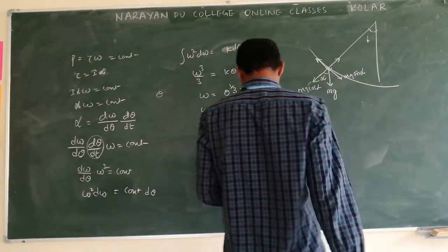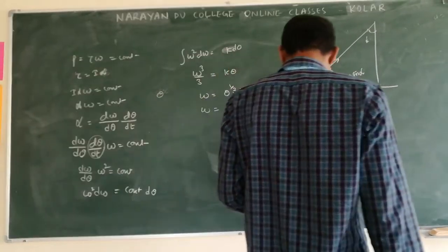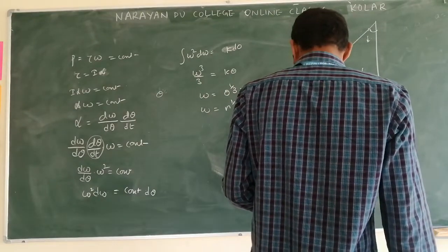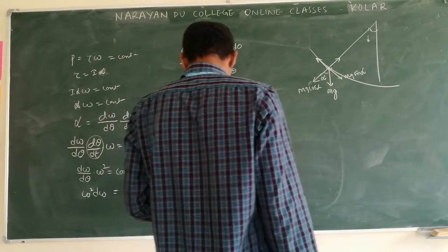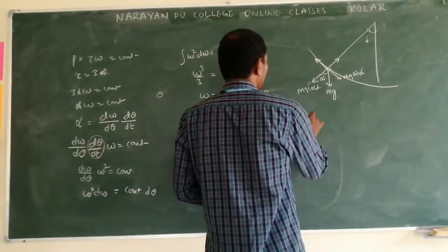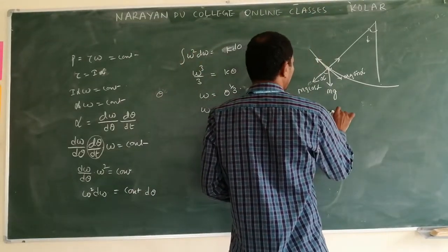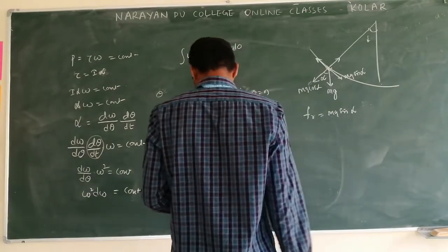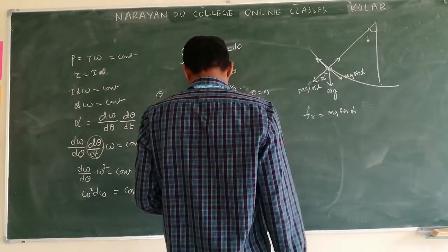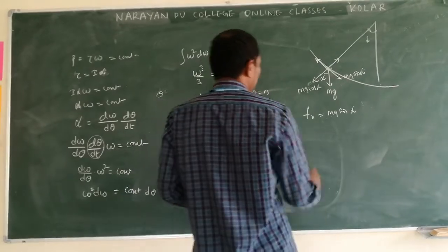Normal reaction acts in this direction. Now, friction is balanced by mg sin alpha.